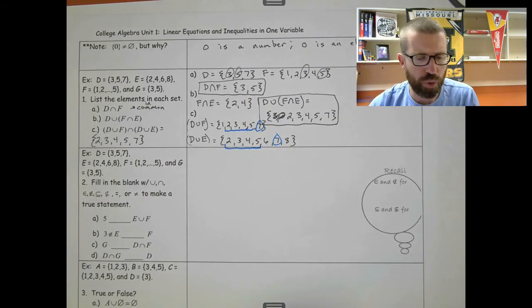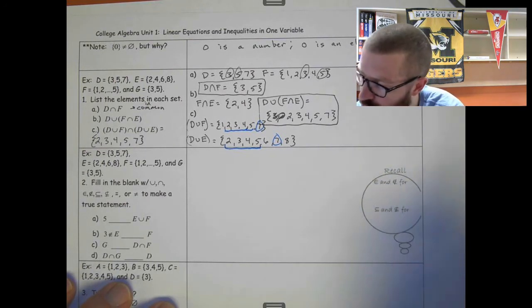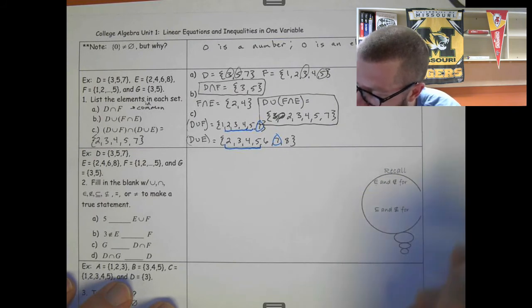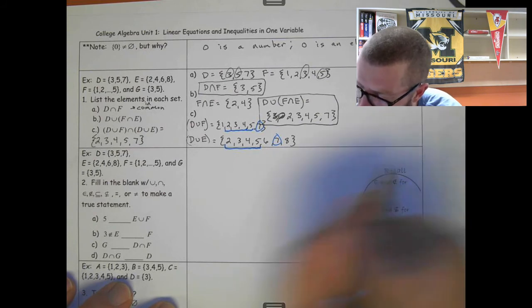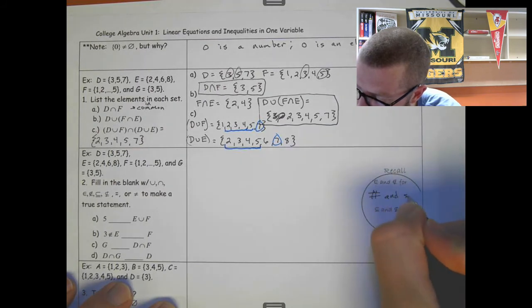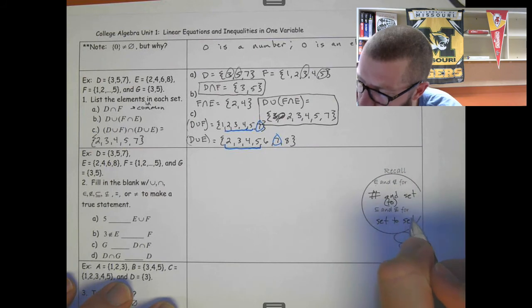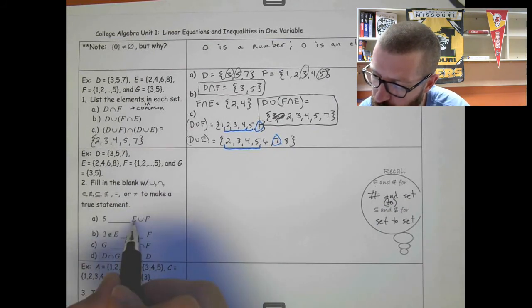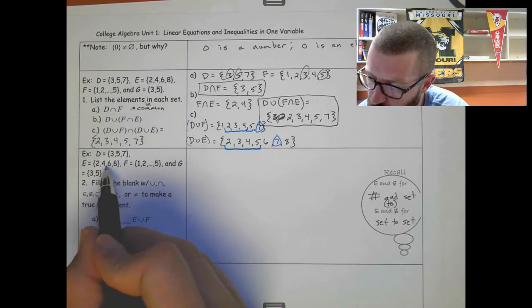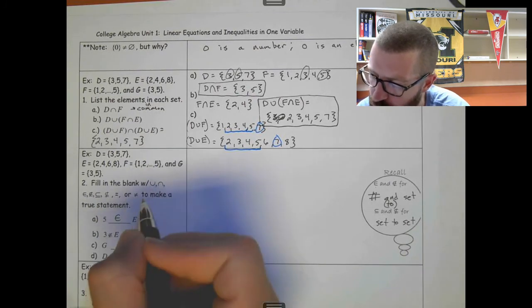Okay, now you want to fill in the blank. And there could be more than one answer. So, this is kind of just a note over here. Remember, element and not an element of is for when you compare an element. Since they're all numbers, we'll say this. This is a number and set, or a number to set. And this is a set to set. So, subset, not subset. You have to be talking about two sets. Okay, so 5. What about 5 and E union F? Well, E union F would be putting these together. And so, 5 would be included if you combine those. So, 5 is an element of E union F.